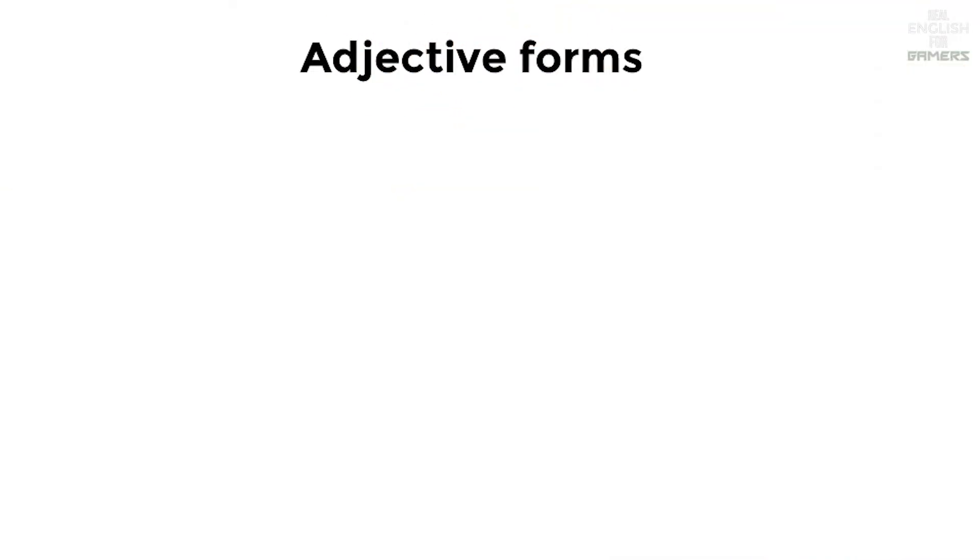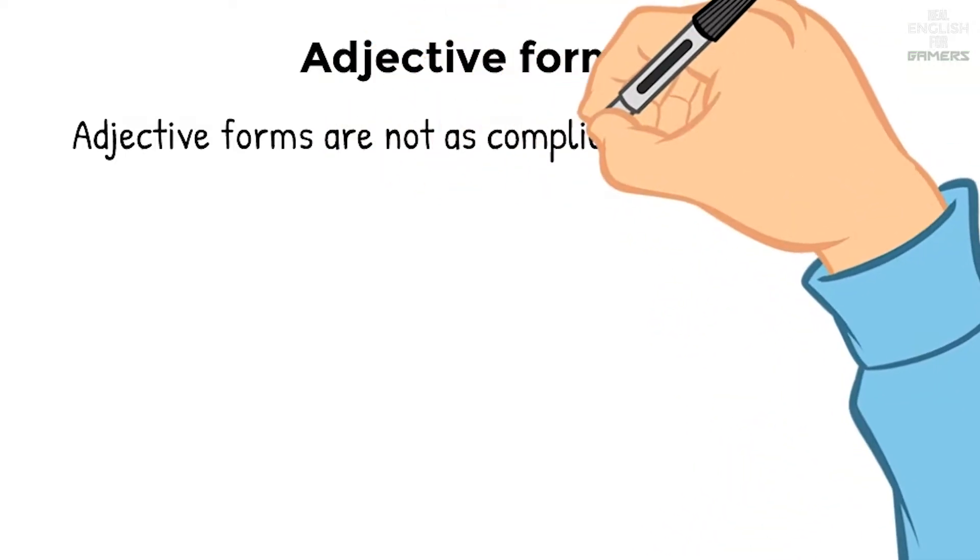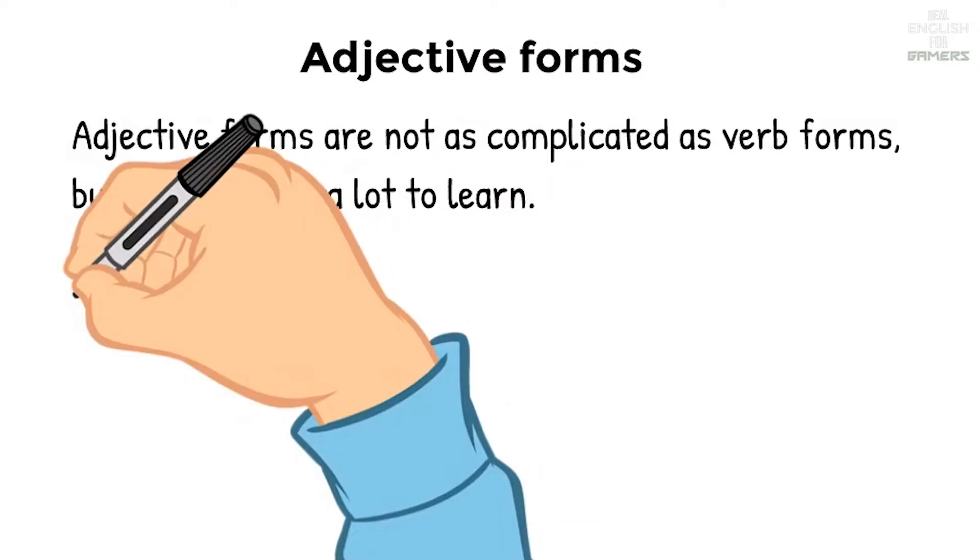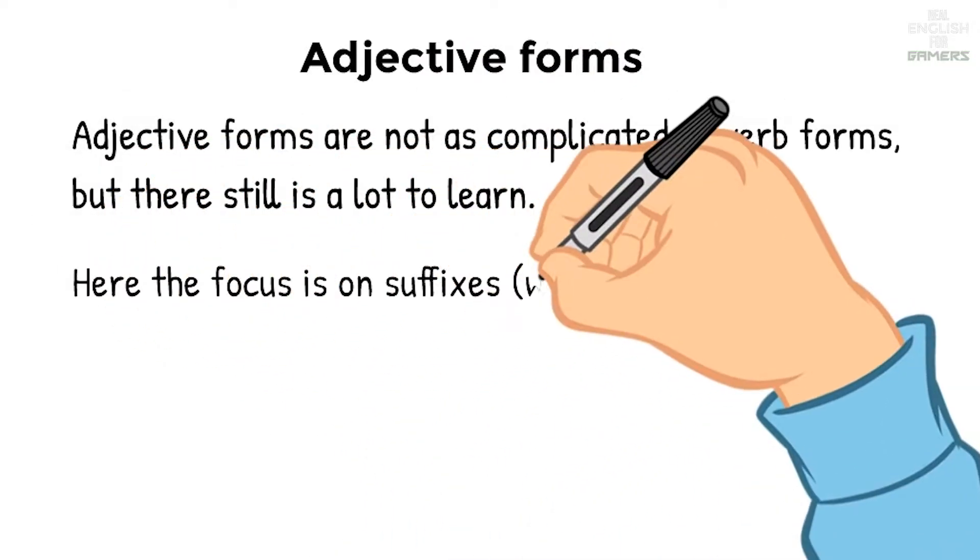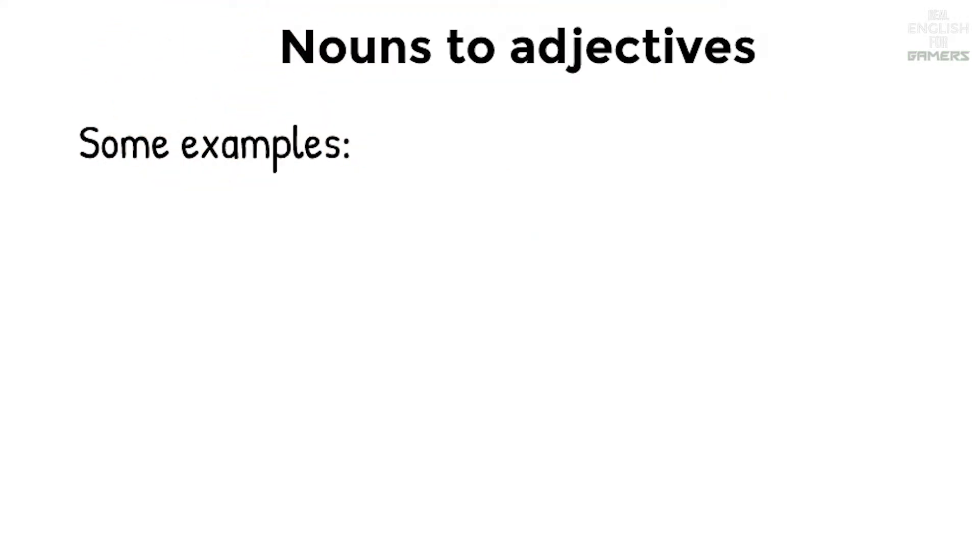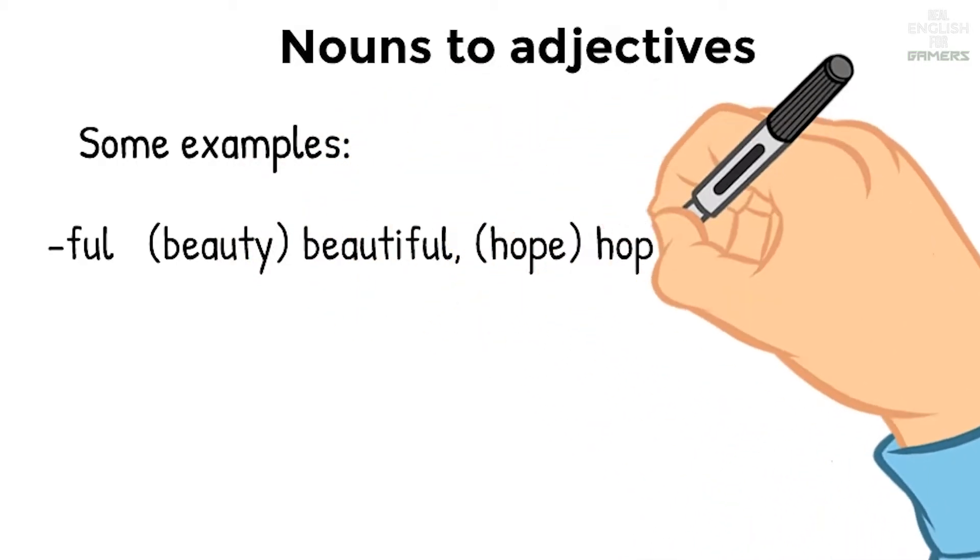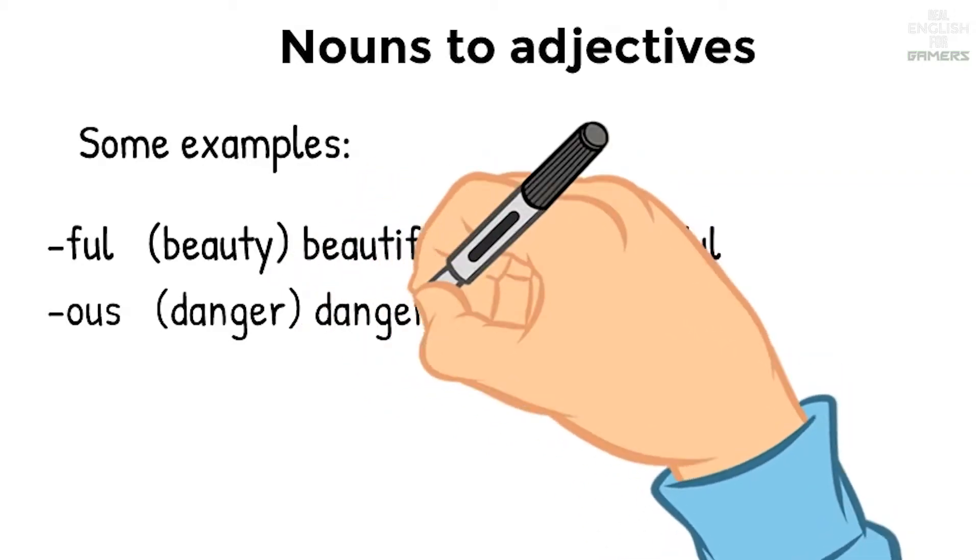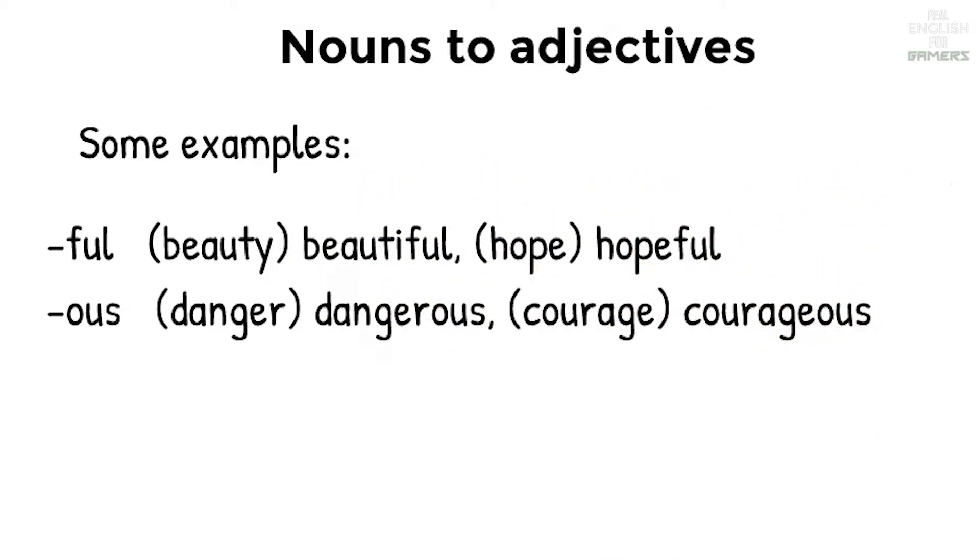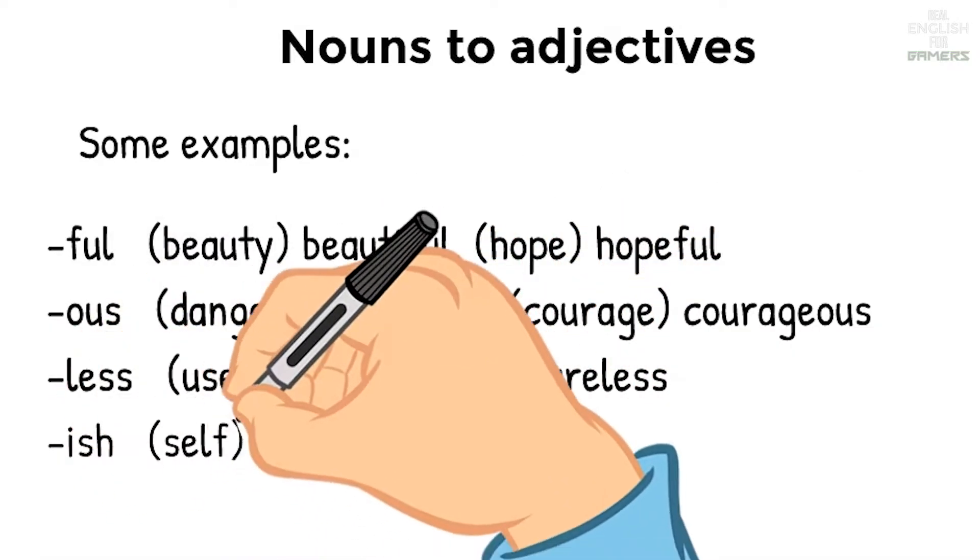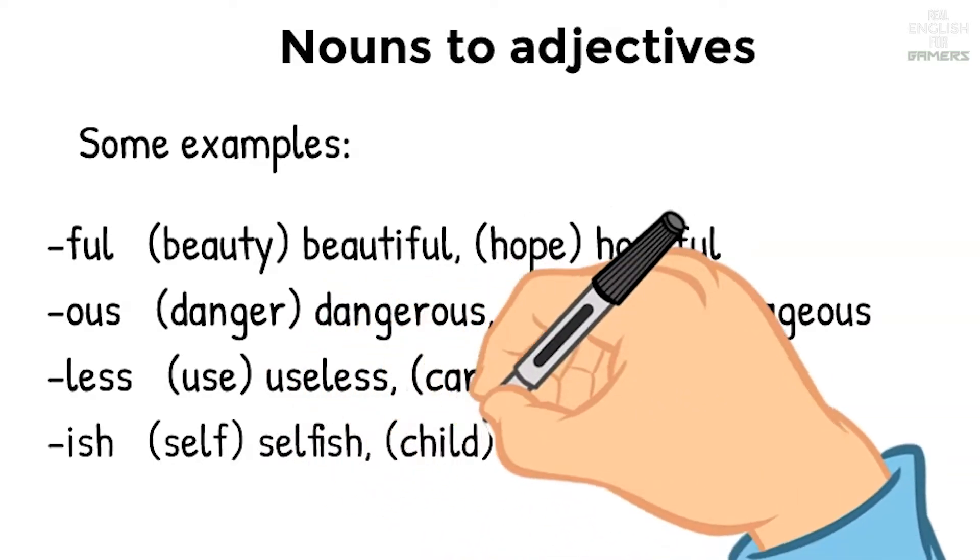Adjective forms. Adjective forms are not as complicated as verb forms, but there still is a lot to learn. Here the focus is on suffixes, word endings. Nouns to adjectives: some examples, beautiful, hopeful, dangerous, courageous, useless, careless, selfish, childish.